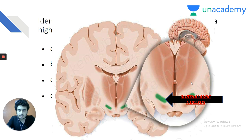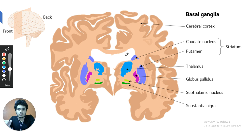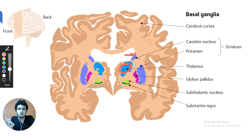This is a coronal section of the front of the brain. The structure encircled in white is the lateral ventricle. Just lateral to the lateral ventricle is the caudate nucleus. The third ventricle is also visible, and just lateral to the third ventricle is the thalamus.